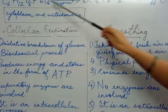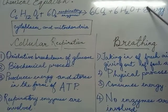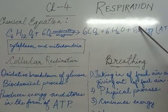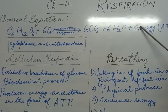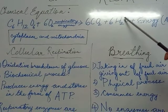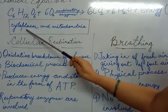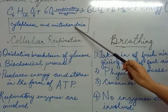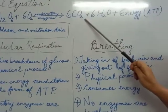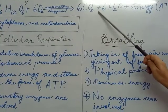This entire process of respiration occurs in a step-by-step manner in each and every cell of the living body. Respiration partially takes place in the cytoplasm of the cell and is completed in the mitochondria of the cell. That is why this is called cellular respiration or internal respiration.